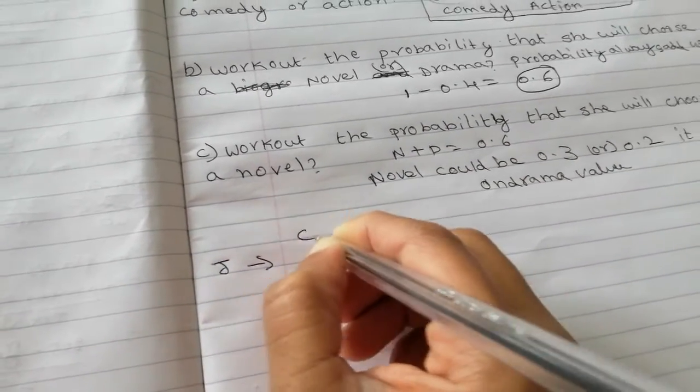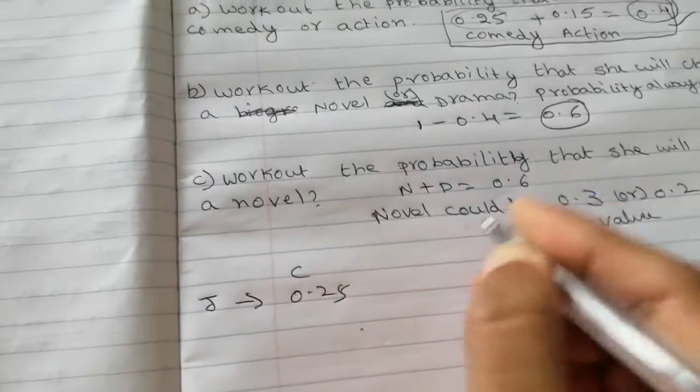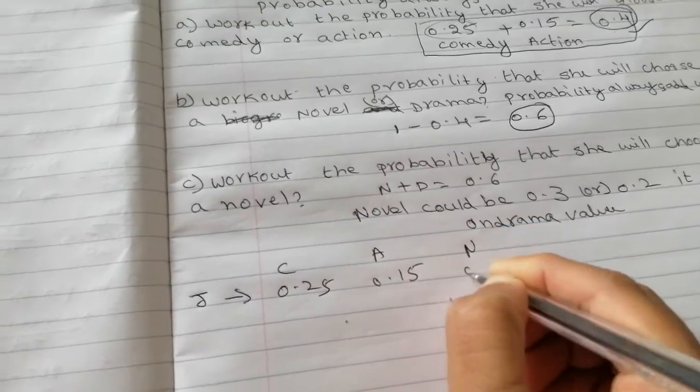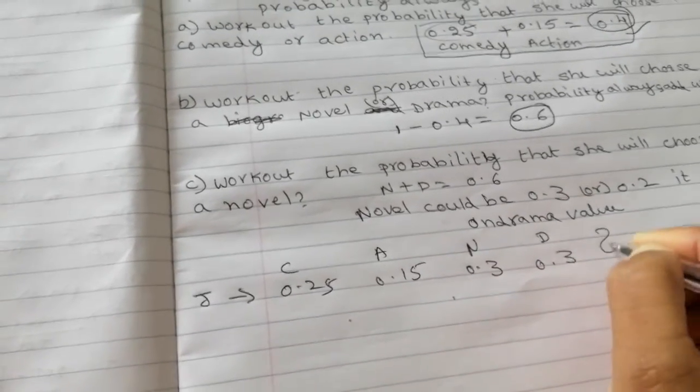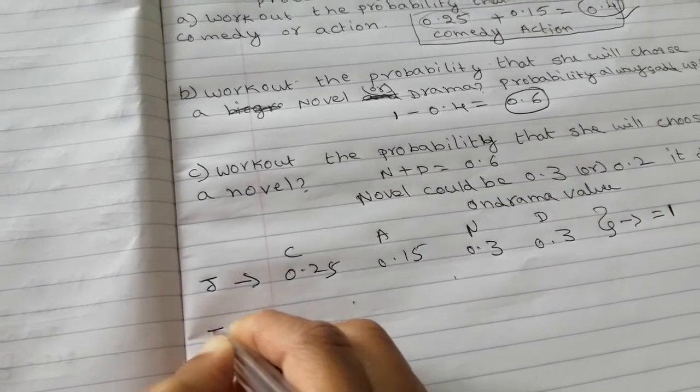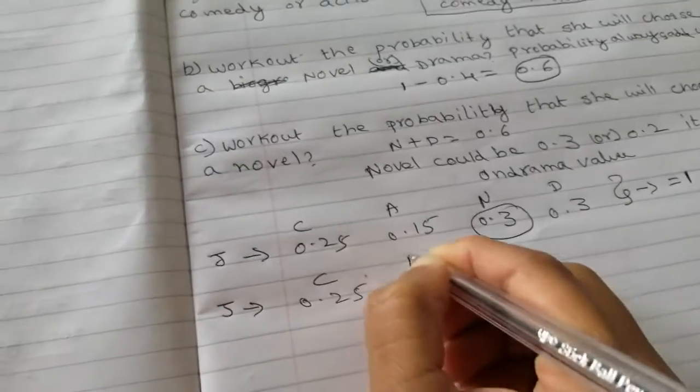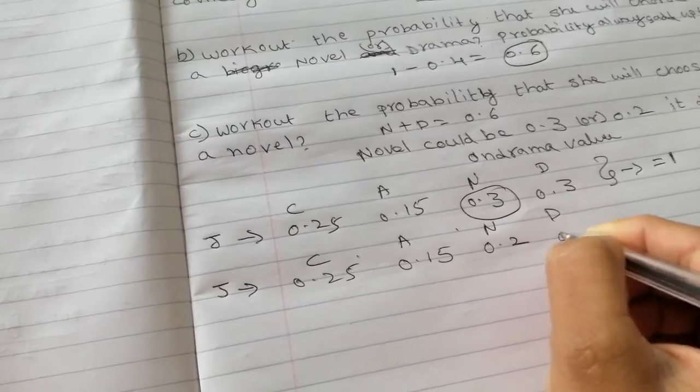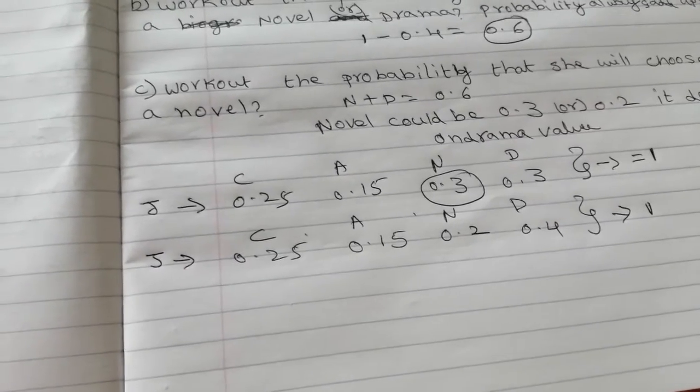For example, if Julie chose comedy 0.25, action 0.15 and novel, if we take 0.3, drama will be 0.3. Then these values are equal to 1. There is another chance that novel value will change. Comedy 0.25, action 0.15 and novel 0.2, drama could be 0.4. Then these values are equal to 1. Probabilities always add up to 1.